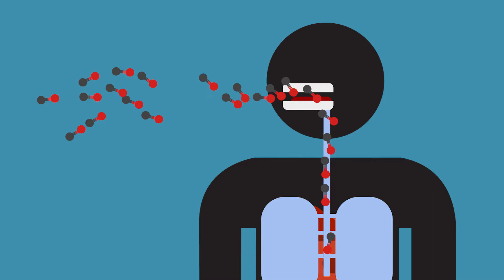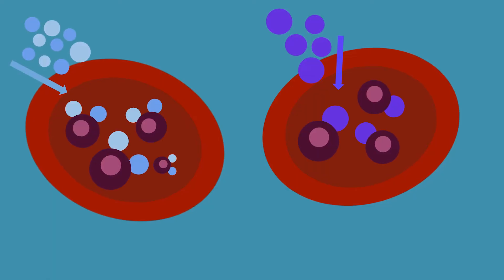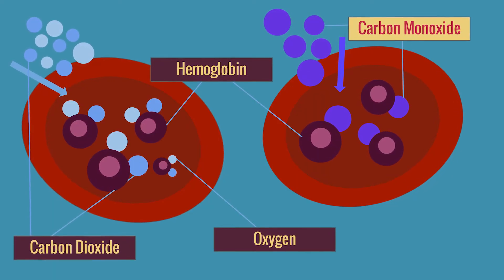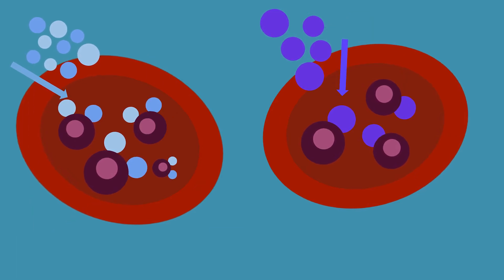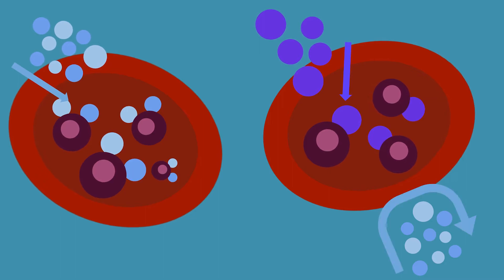Normally, hemoglobin is meant to transport oxygen and carbon dioxide and release them at certain parts of the body. But in the case of carbon monoxide poisoning, the gas invades the bloodstream and attaches itself to the hemoglobin in the red blood cells with a very strong bond, causing the cells to be unable to release it. This prevents oxygen and carbon dioxide from binding naturally.